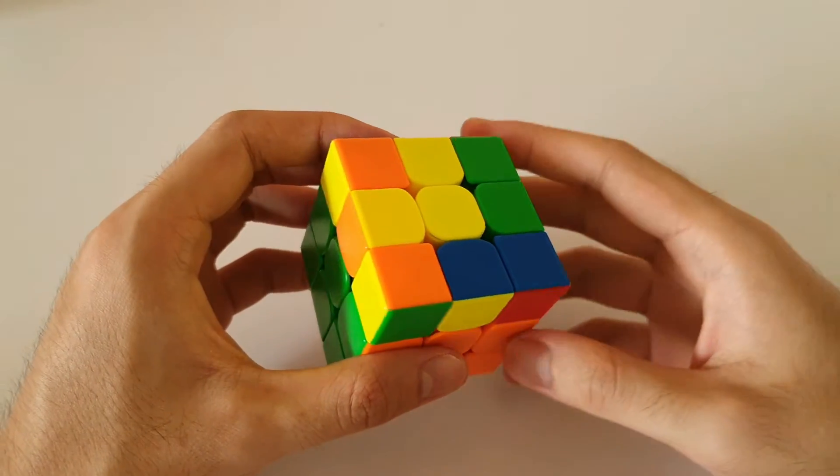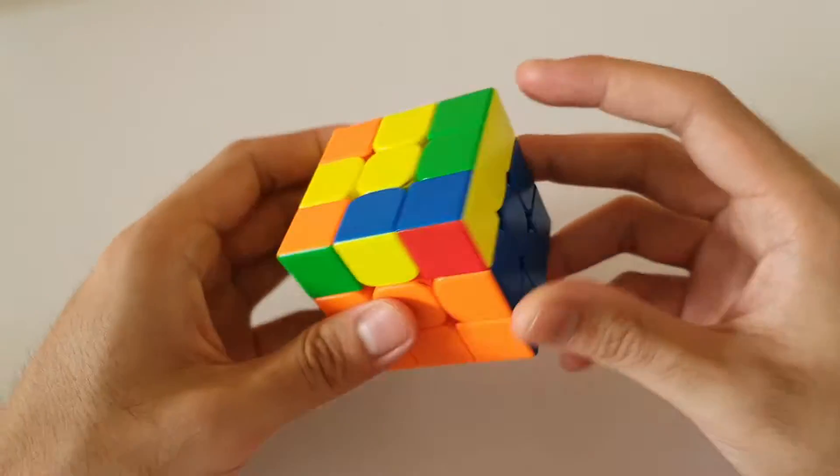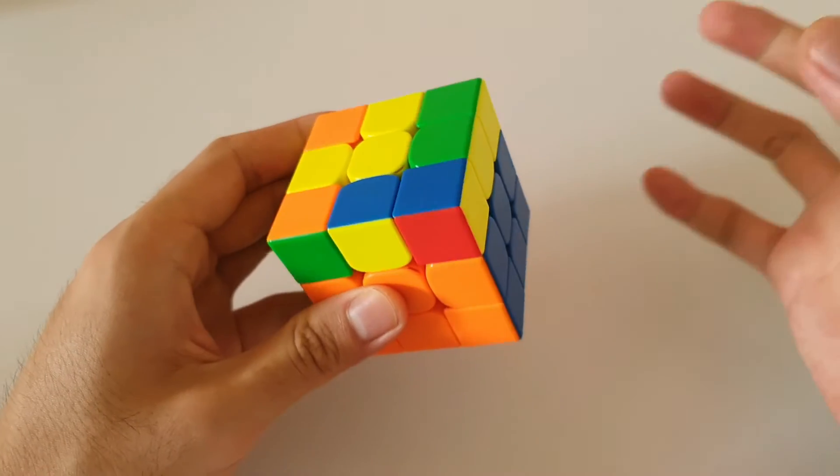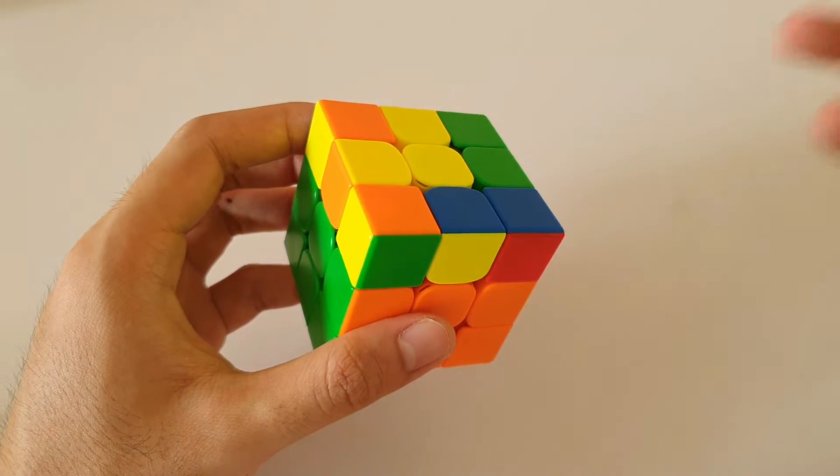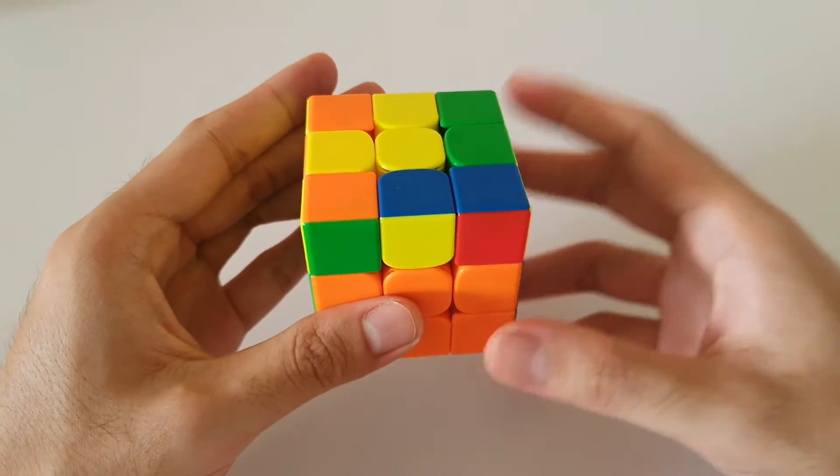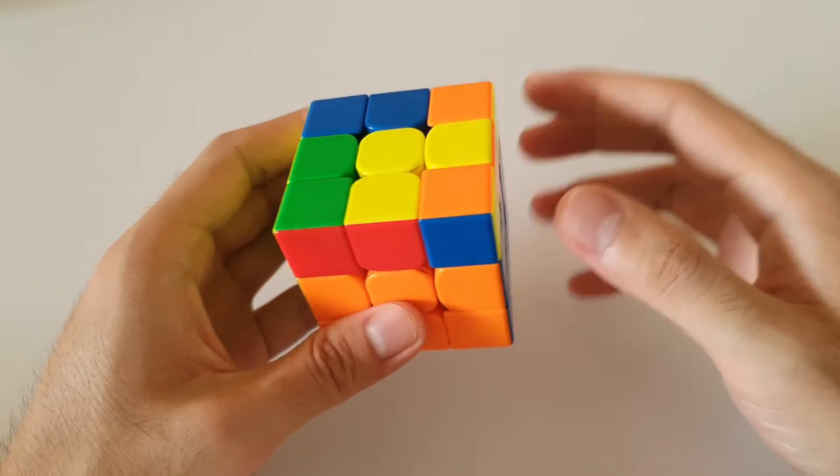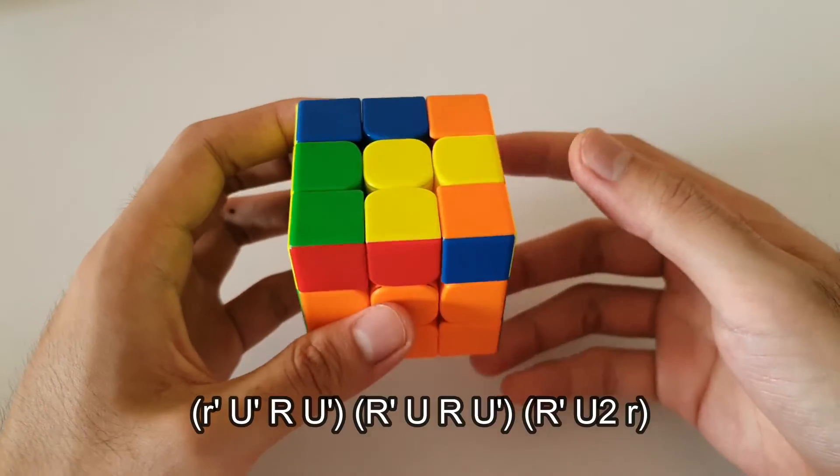So next OLL case is this one here, very similar to the previous one, headlights and 3x1 bar. Now with this case, you could use the left-handed algorithm of the one I showed previously, but I wouldn't actually recommend it because you can pretty easily do a U2 and do the same algorithm from the back angle here.